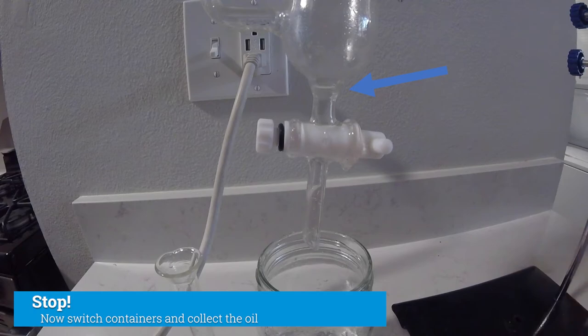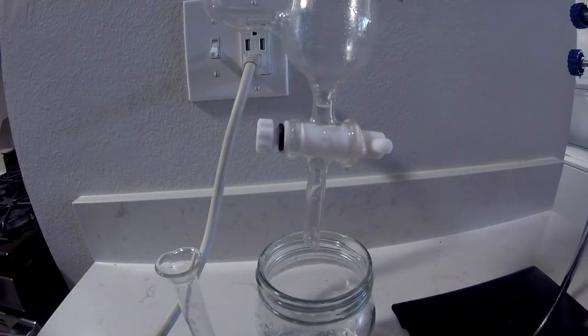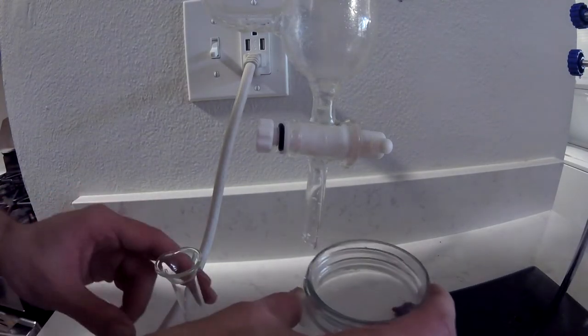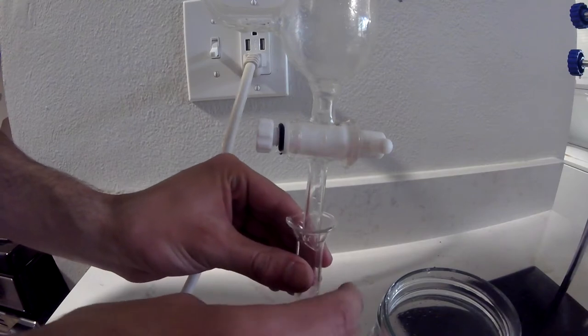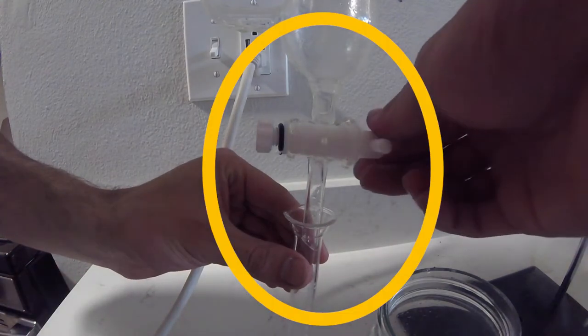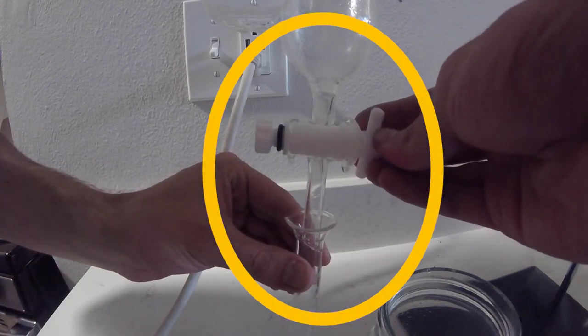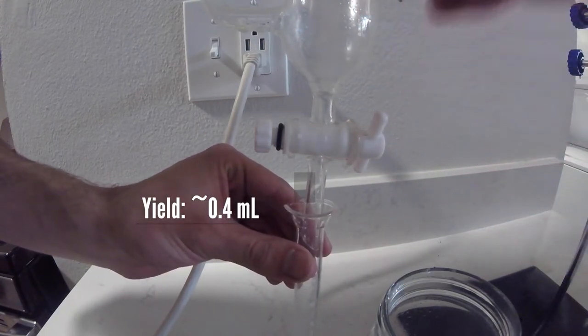After carefully separating the water from the oil using the separatory funnel, we're ready to measure our final yield. Today, we started with 161 grams of fresh spearmint leaves, and we ended up extracting approximately 0.4 milliliters of essential oil.